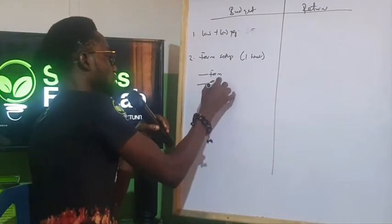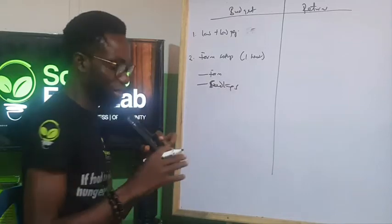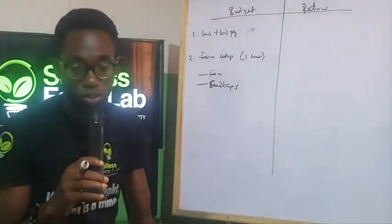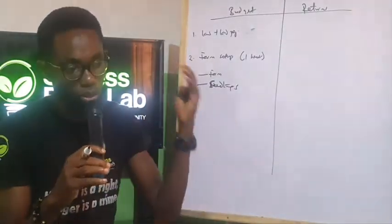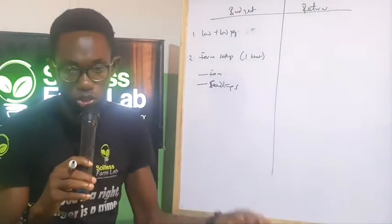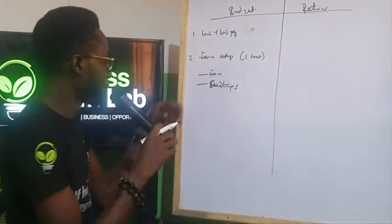Two, we have the seedlings. So by seedlings, we will buy seed, we will have nursery trays, pots, we will buy coco peat, we will use for nursery and compost to mix. That is two.